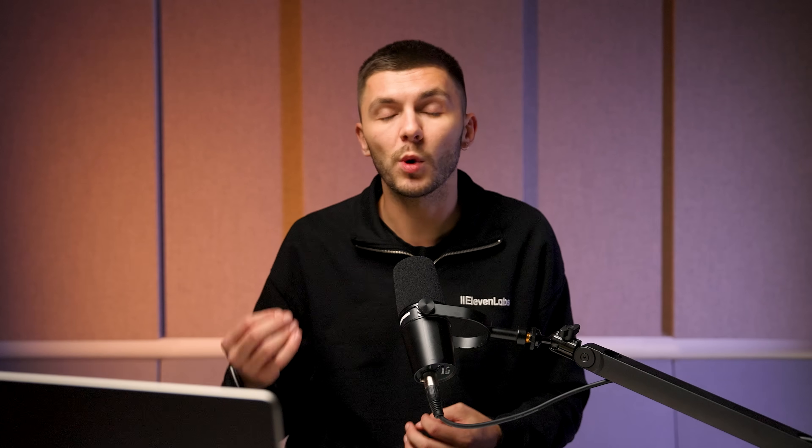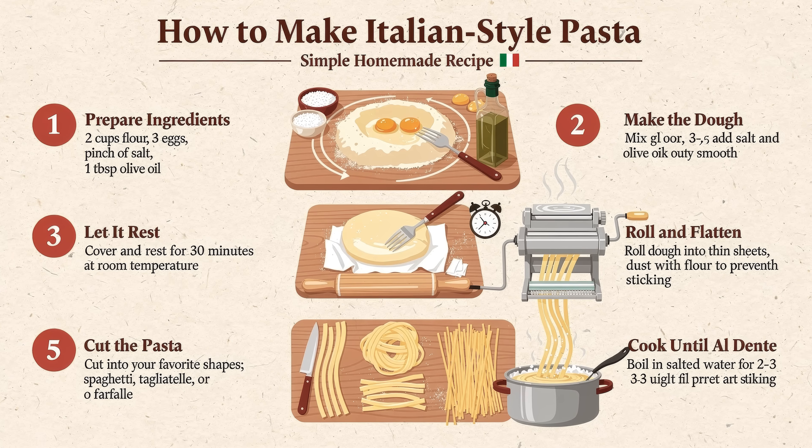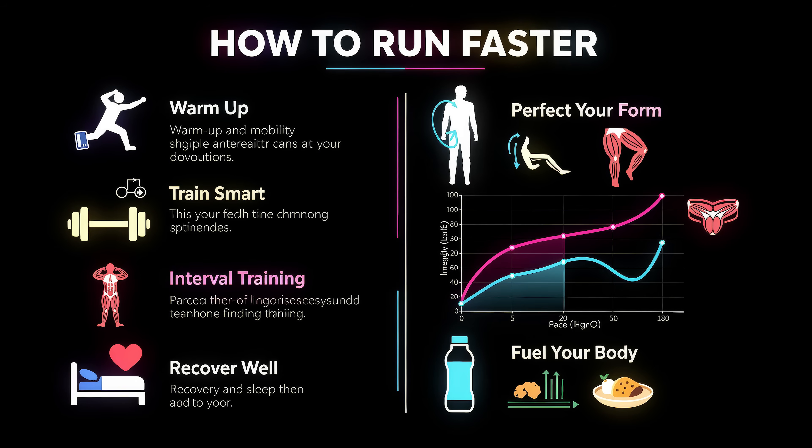On top of the color support, the model can also generate one-shot infographics — it can handle the layout and typography of complex diagrams. However, the model doesn't create the content itself, it just does the design. You still need to provide the specific data points and text you want in the infographic, but it can handle everything else. A great way to do this is using the JSON format and using ChatGPT to help put it all together.